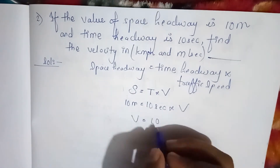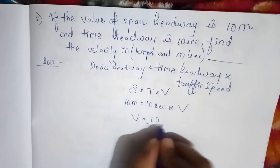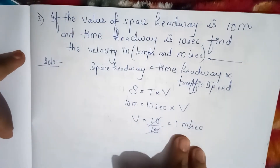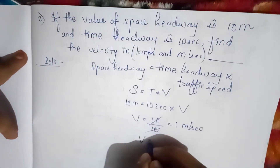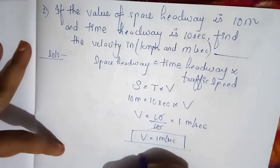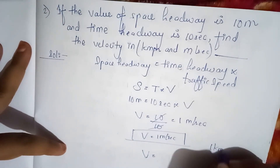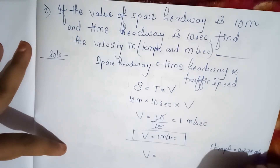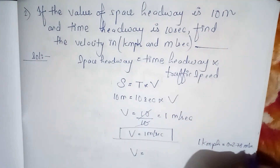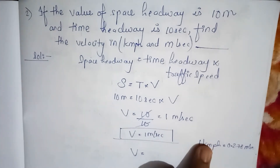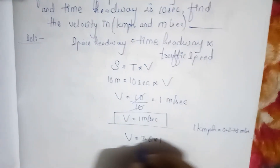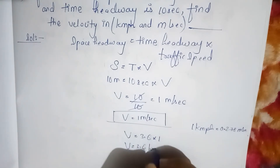You can find speed easily: V = space headway / time headway = 10 / 10 = 1 meter per second. If the question asks for kmph: 1 kmph = 0.278 meter per second. To convert from meter per second to kmph, multiply by 3.6. So 1 × 3.6 = 3.6 kmph.